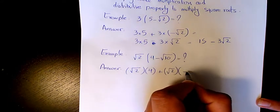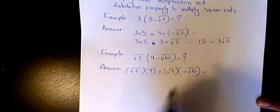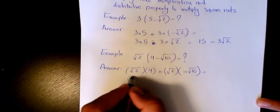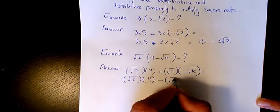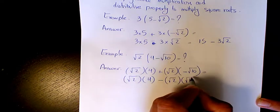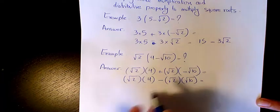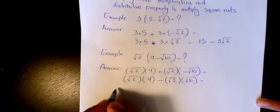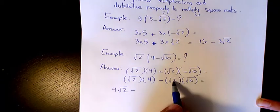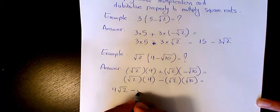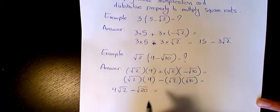Or we can say √2 times 4 minus √2 times √10. Both of them are exactly the same thing. So the first one is going to be 4√2, and the second one is going to be √2 times √10 which is √20.